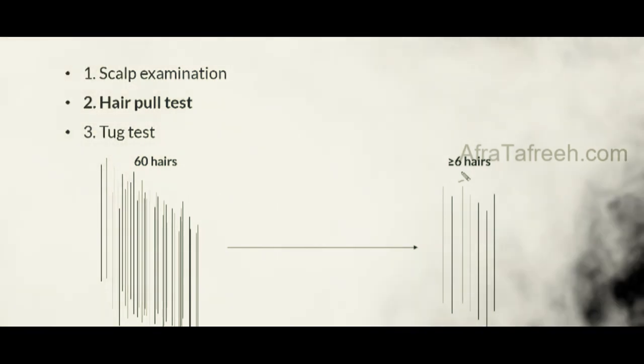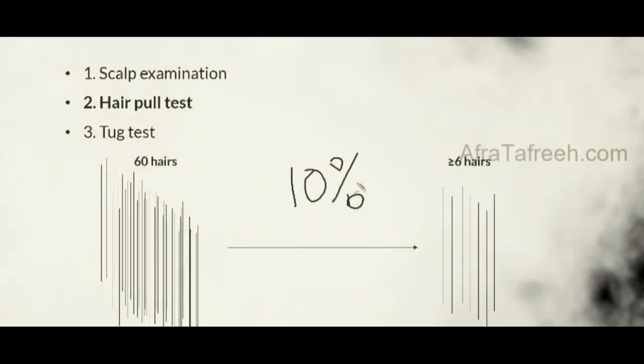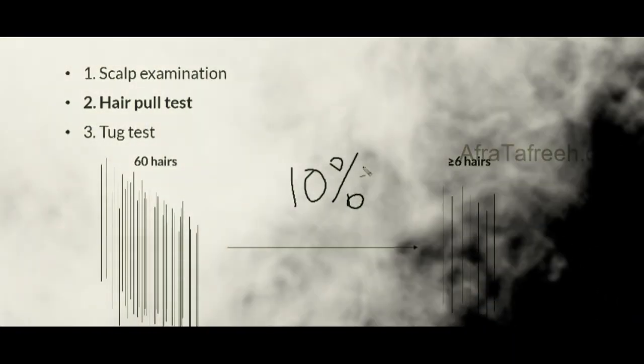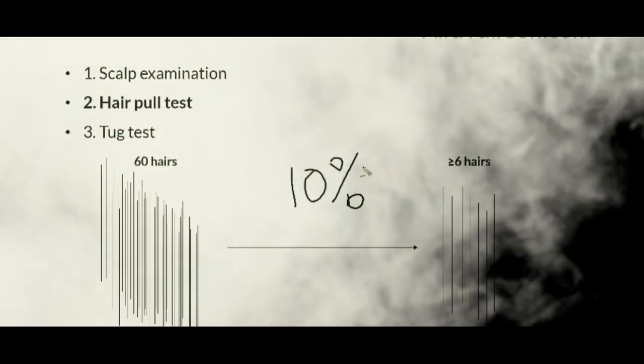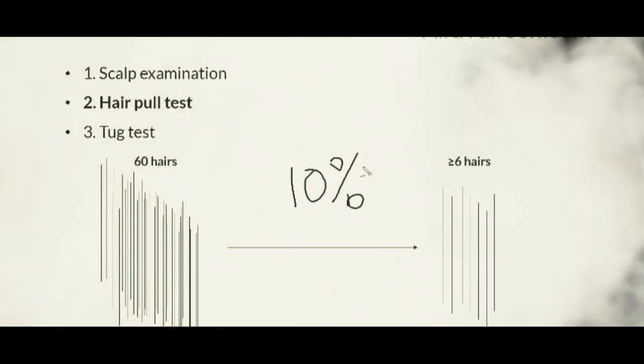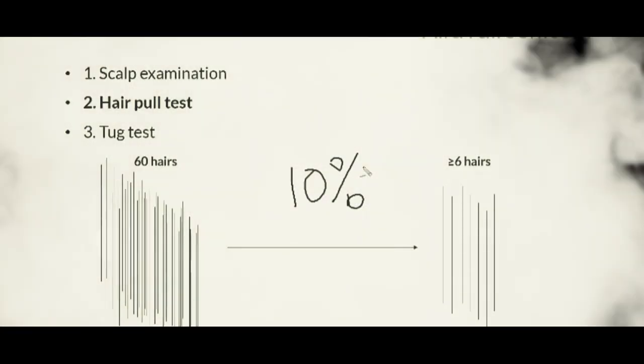A positive hair pull test means at least 10% of hairs were removed during the maneuver, indicating active shedding. For examination purposes, question writers frequently use the hair pull test to assess your knowledge of which types of alopecia present with active shedding. Understanding this test can therefore help greatly in distinguishing the different types of alopecia.